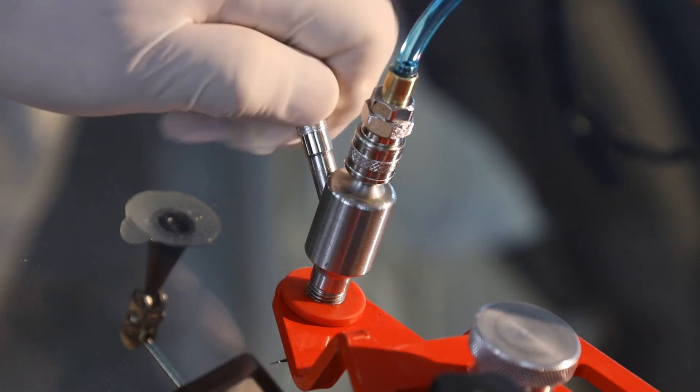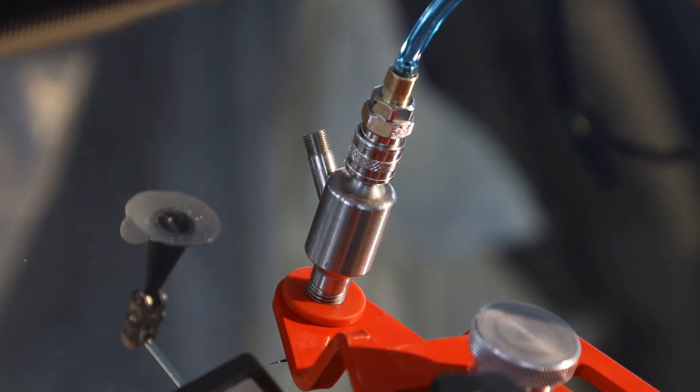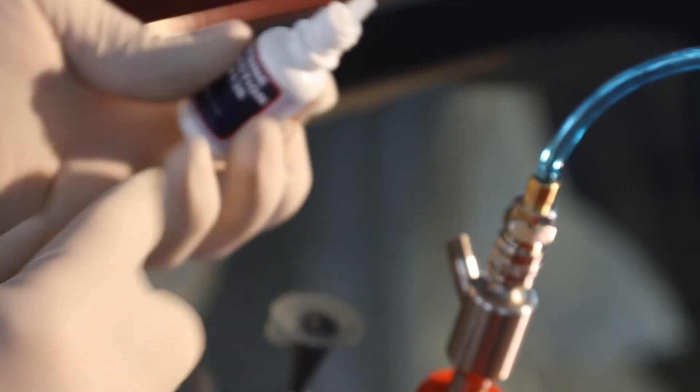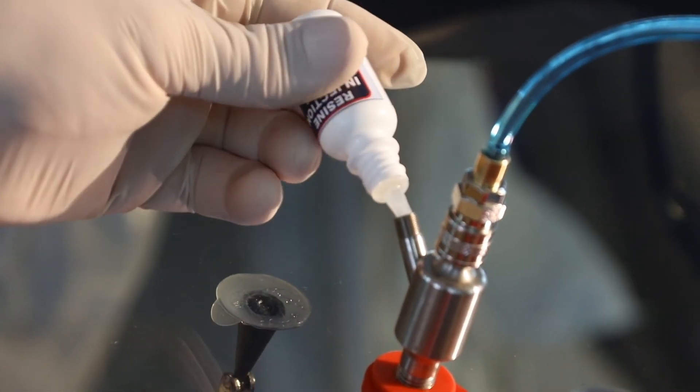Unscrew the cap from the injector to introduce resin inside. Fill it directly from the bottle or fill it with a syringe, then screw the cap to lock.